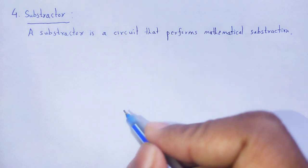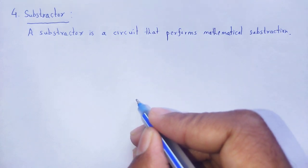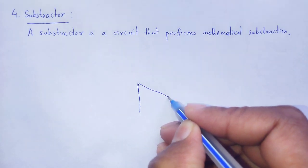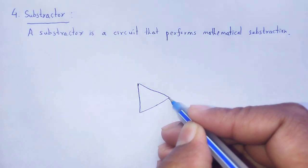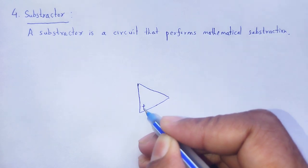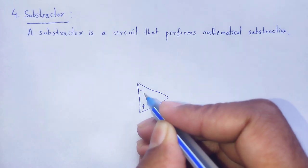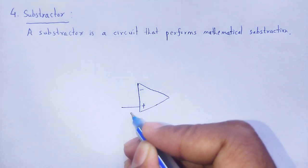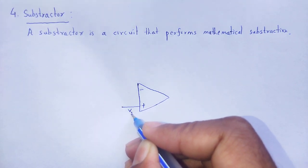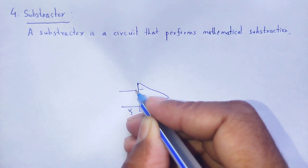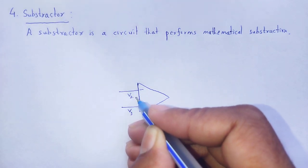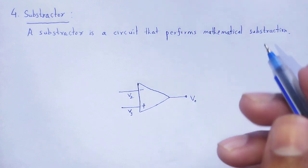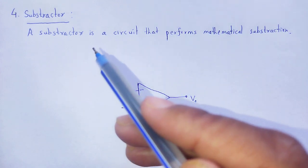As we know, an op-amp itself has two terminals — one is non-inverting and another one is inverting. The positive non-inverting terminal has potential V1, the inverting terminal has potential V2, and the output you obtain is Vo.